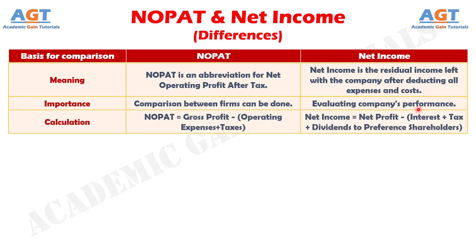Difference number 3: NOPAT arrives after deducting tax from operating profit. On the other hand, Net Income arrives after deducting all expenses, profit, tax and dividends. The company focuses on the calculation of Net Income for knowing the profitability of the company.